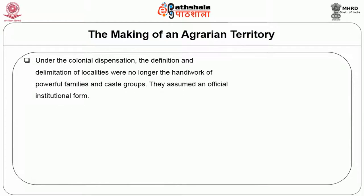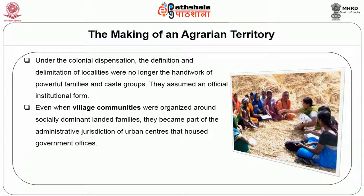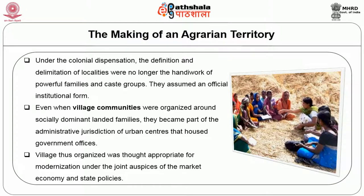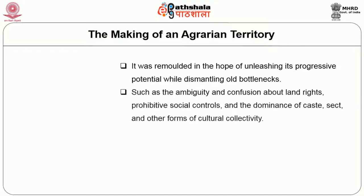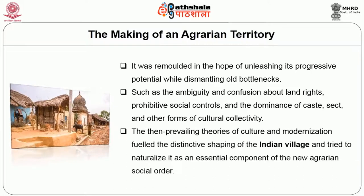Under the colonial dispensation, the definition and delimitation of localities were no longer the handiwork of powerful families and caste groups — they assumed an official institutional form. Village as organized was thought appropriate for modernization under the joint auspices of the market economy and state policies. It was remolded to unleash its progressive potential while dismantling old bottlenecks such as ambiguity about land rights, prohibitive social controls, and the dominance of caste, sect, and other forms of cultural collectivity.